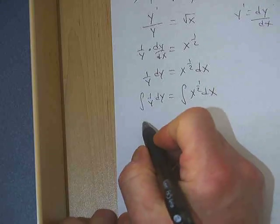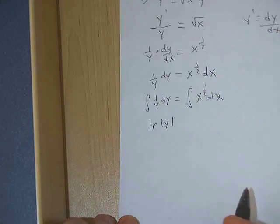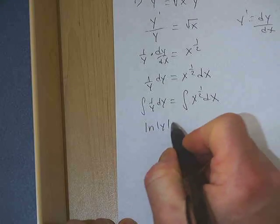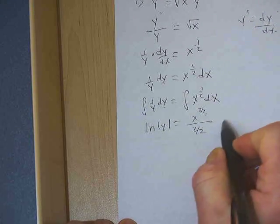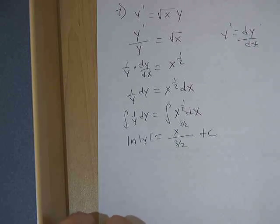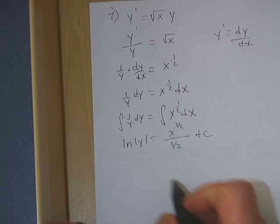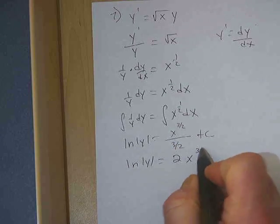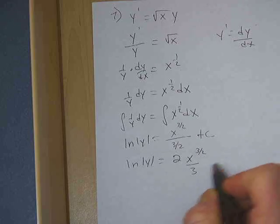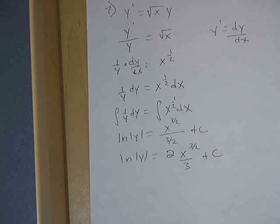And the integral of 1 over y is the natural log of the absolute value of y, and the integral of x to the 1/2 is x to the 3/2 over 3/2 plus c. Clean up the right side a little bit before we go on. That's going to be 2x to the 3/2 over 3 plus c.